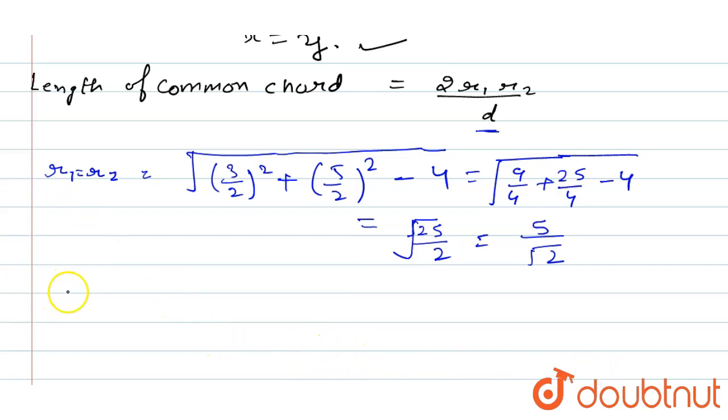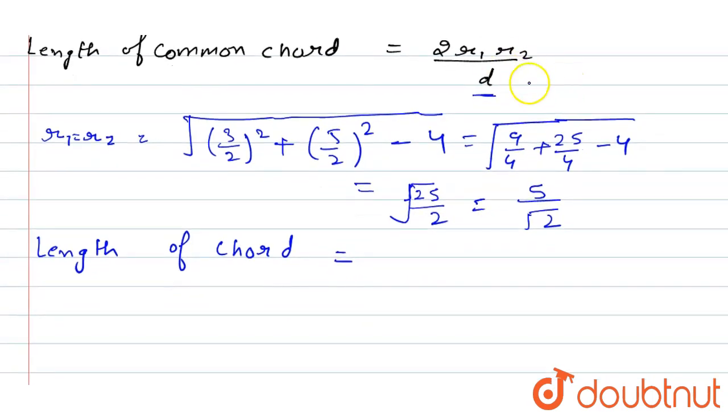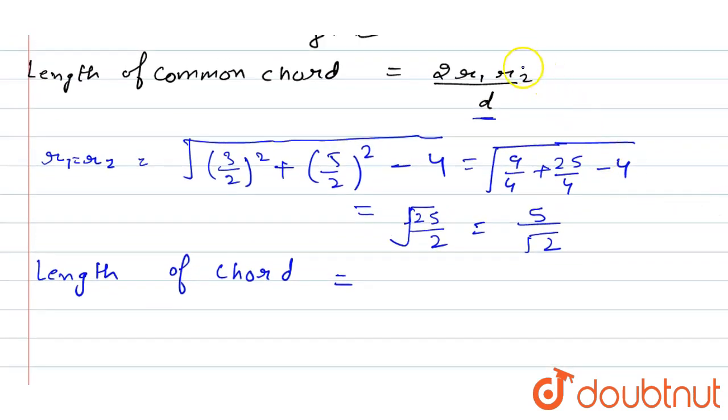Next, find the length of the chord using the formula with the values. Substituting: 2 into r1 and r2, both values are 25 upon root 2. The r1 and r2 values are the same: 5 upon under root 2 into 5 upon under root 2, upon d, where d equals under root 2.